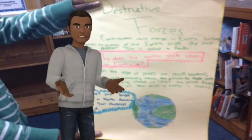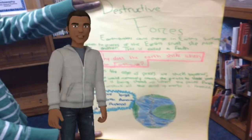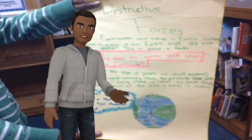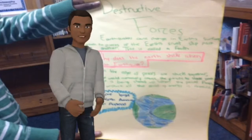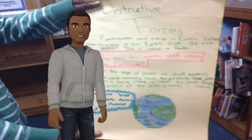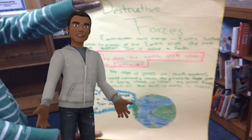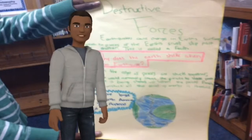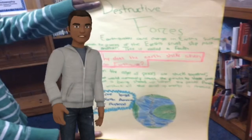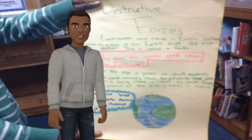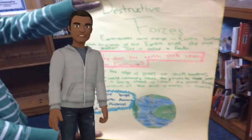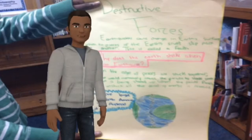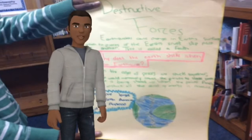Earthquakes cause change in Earth's surface when the pieces of the Earth's crust slip past one another. This is called a fault. When the edges of a fault are stuck together, energy that would normally cause the pieces to slide past one another builds up, and when the pieces finally come apart, that energy is released.